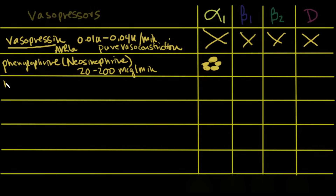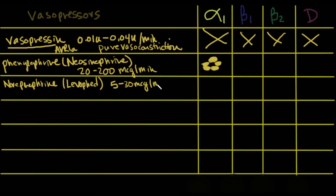Next is norepinephrine, also known as levophed, dosed between 5 and 30 micrograms per minute. Whereas phenylephrine is pure alpha, levophed stimulates alpha-1 receptors strongly, but also stimulates beta-1 and a little beta-2. Because alpha-1 stimulation outweighs beta-2, you get net vasoconstriction, plus additional beta-1 stimulation that provides a modest increase in cardiac output.